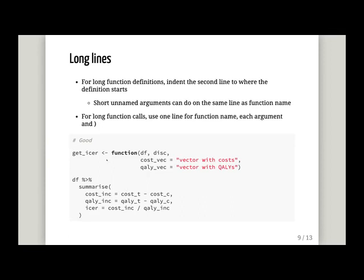For long lines, you do indentation the same way. If you have a long function definition, you indent the second line to where the definition starts. If you have a couple of short arguments, they can go on the same line. For a long function call, you use one line for the function name, one line each for each argument, and one line for the closing bracket.